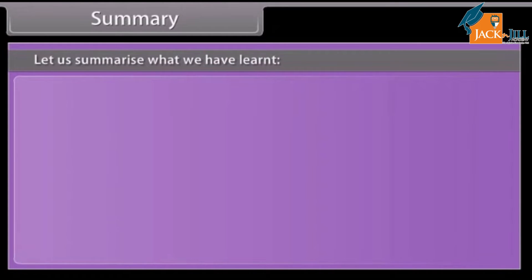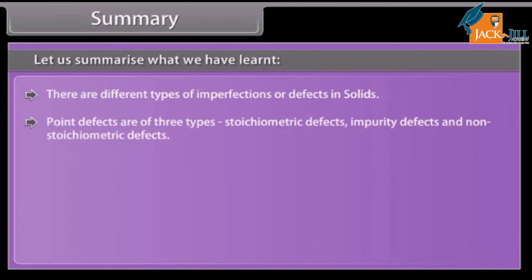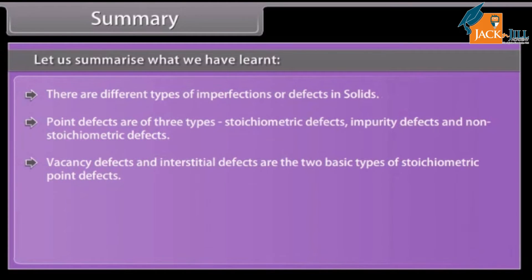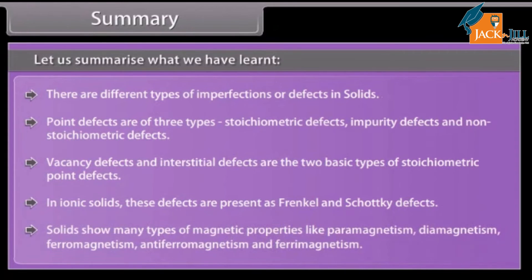Summary: There are different types of imperfections or defects in solids. Point defects are of three types: stoichiometric defects, impurity defects, and non-stoichiometric defects. Vacancy defects and interstitial defects are the two basic types of stoichiometric point defects. In ionic solids, these defects are present as Frenkel and Schottky defects. Solids show many types of magnetic properties like paramagnetism, diamagnetism, ferromagnetism, anti-ferromagnetism, and ferrimagnetism.